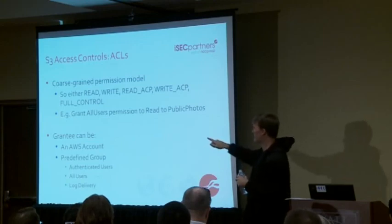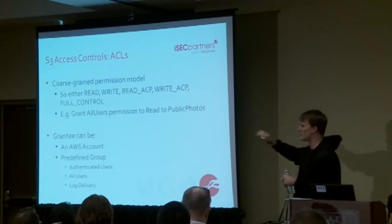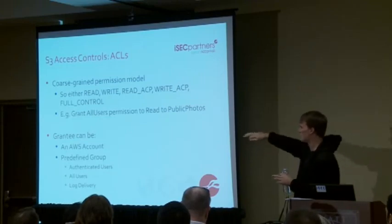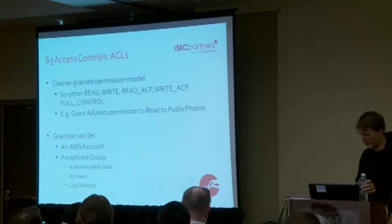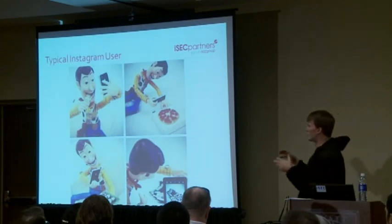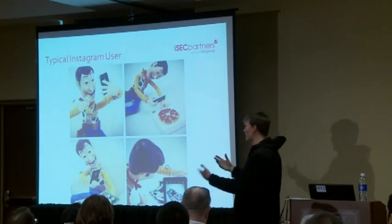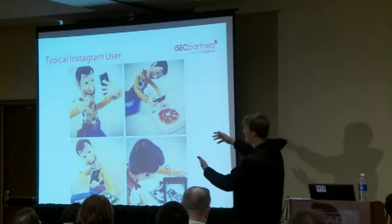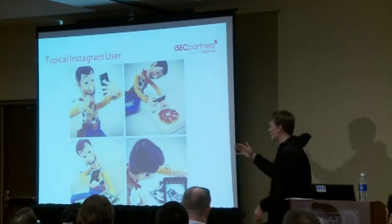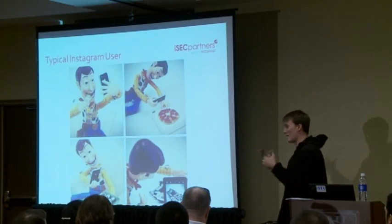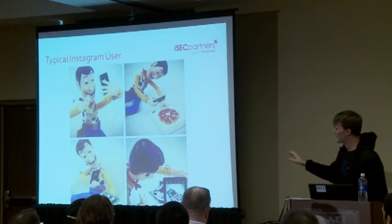Here's an example of a permission: 'grant all users permission to read public photos.' In S3 you'd do this through XML, but this is just a proof of concept. This makes sense if you have a mobile photo-sharing application - say you have a user who takes photos of food and shares them. This is great for ACLs because you have a lot of objects in a single bucket.